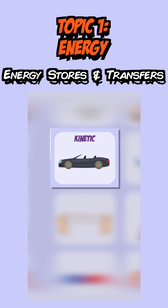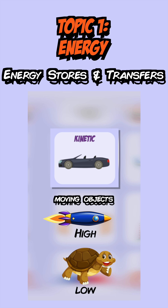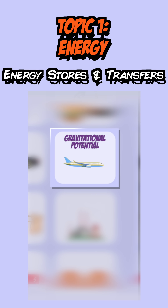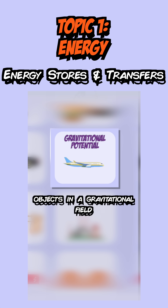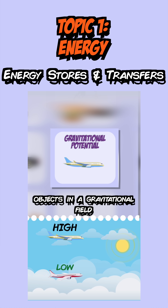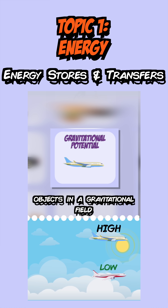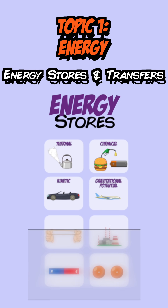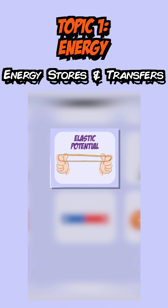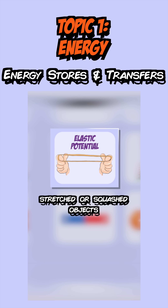Next is the kinetic energy store, which any moving object has — the faster the object, the more it has. Gravitational potential energy stores is energy stored due to an object's height in a gravitational field; the higher the object, the more energy it has. We also have elastic potential energy stores, which is energy stored whenever an object is stretched or squashed.